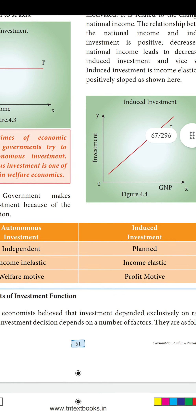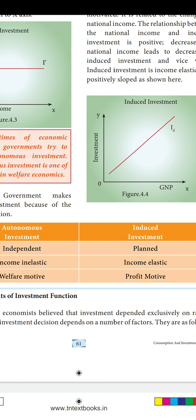Now the difference between autonomous and induced investment: Autonomous investment is independent — not dependent upon anything. Induced investment is the planned one. Autonomous investment is income inelastic, but in induced investment, income is elastic. Autonomous investment always aims for welfare, but induced investment's motive is profit alone.